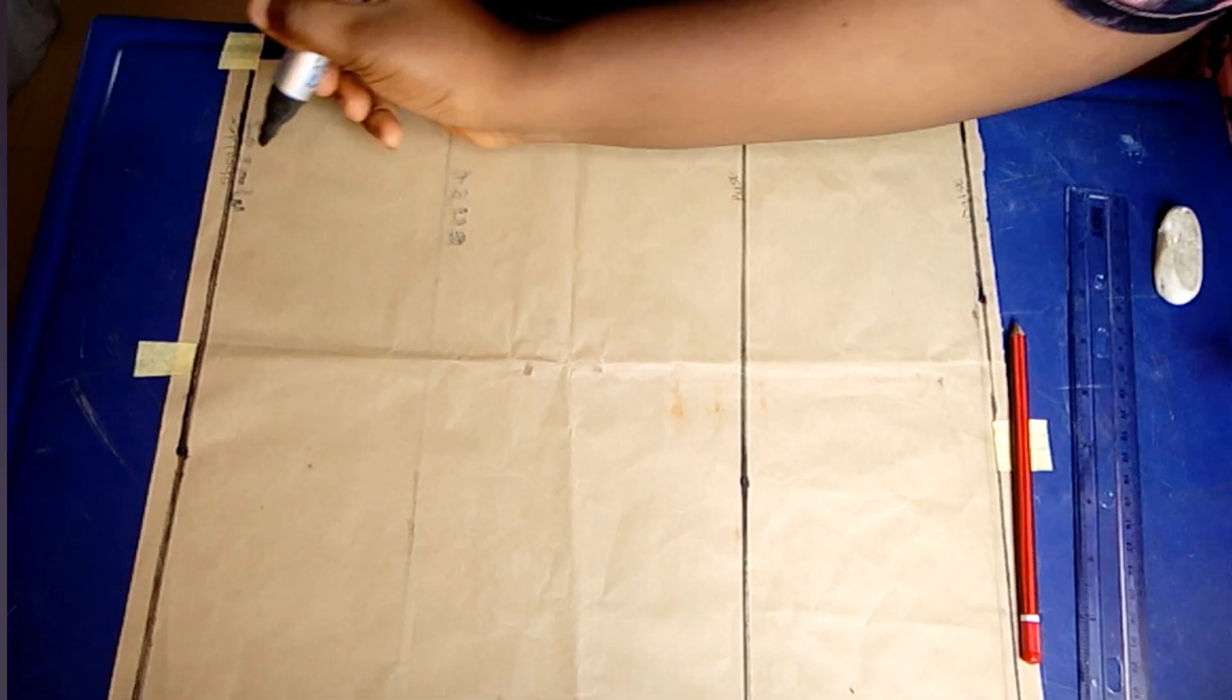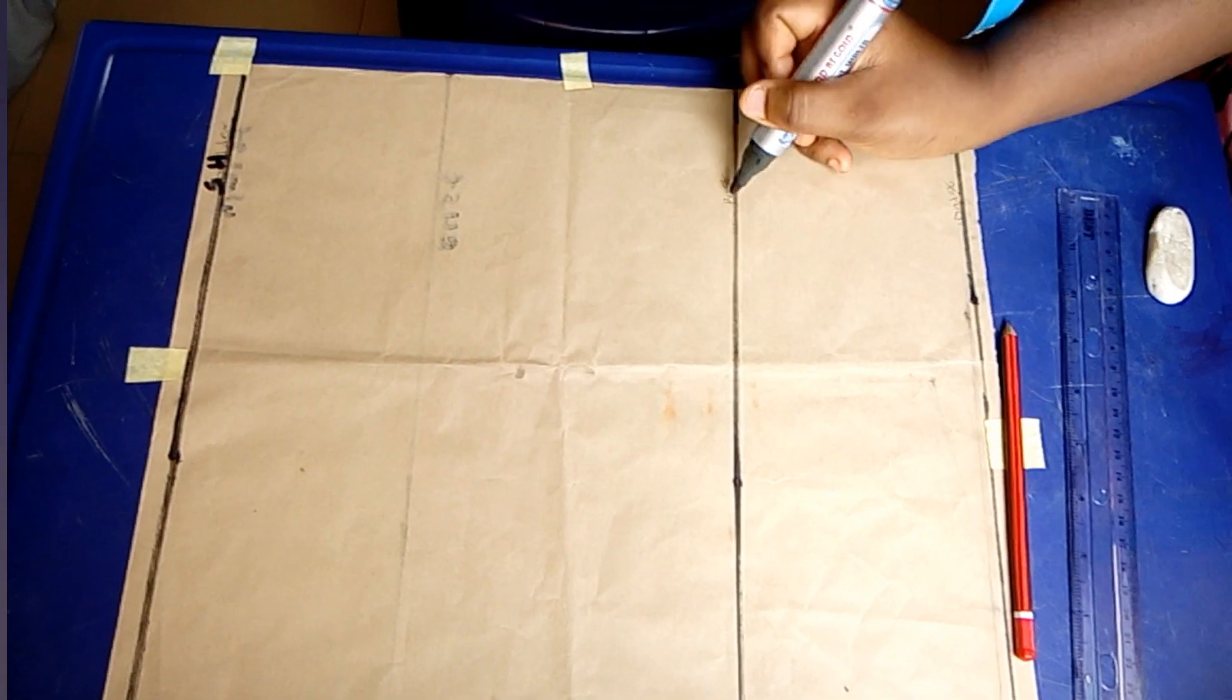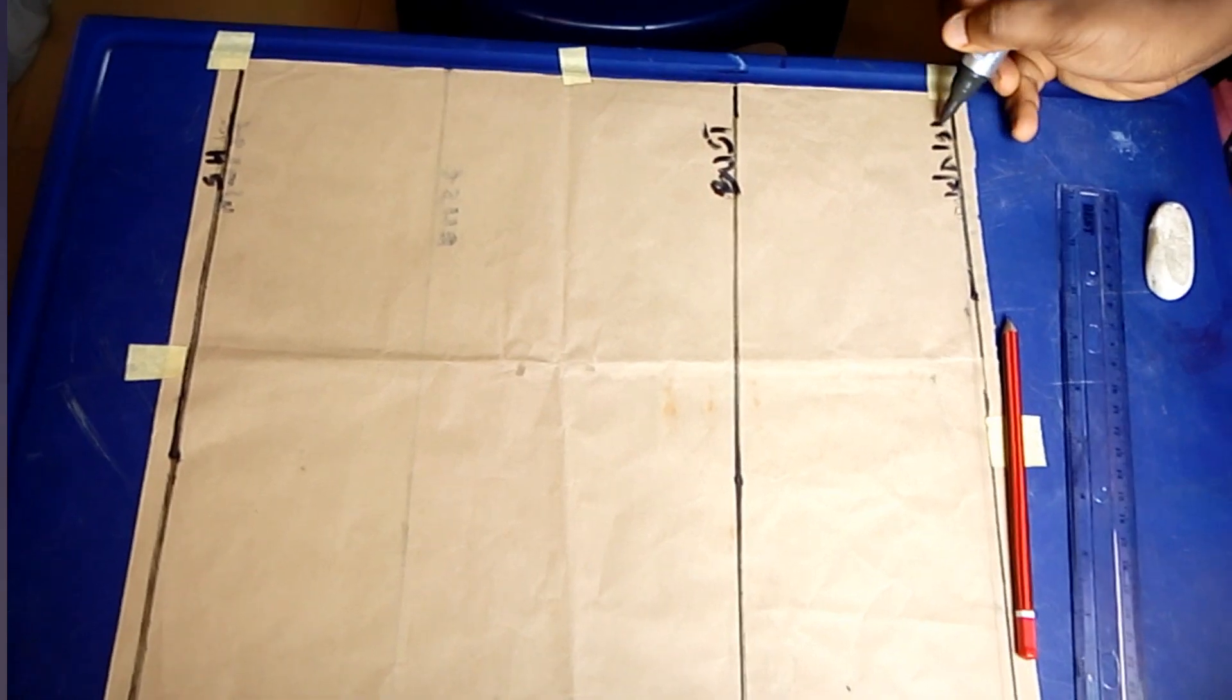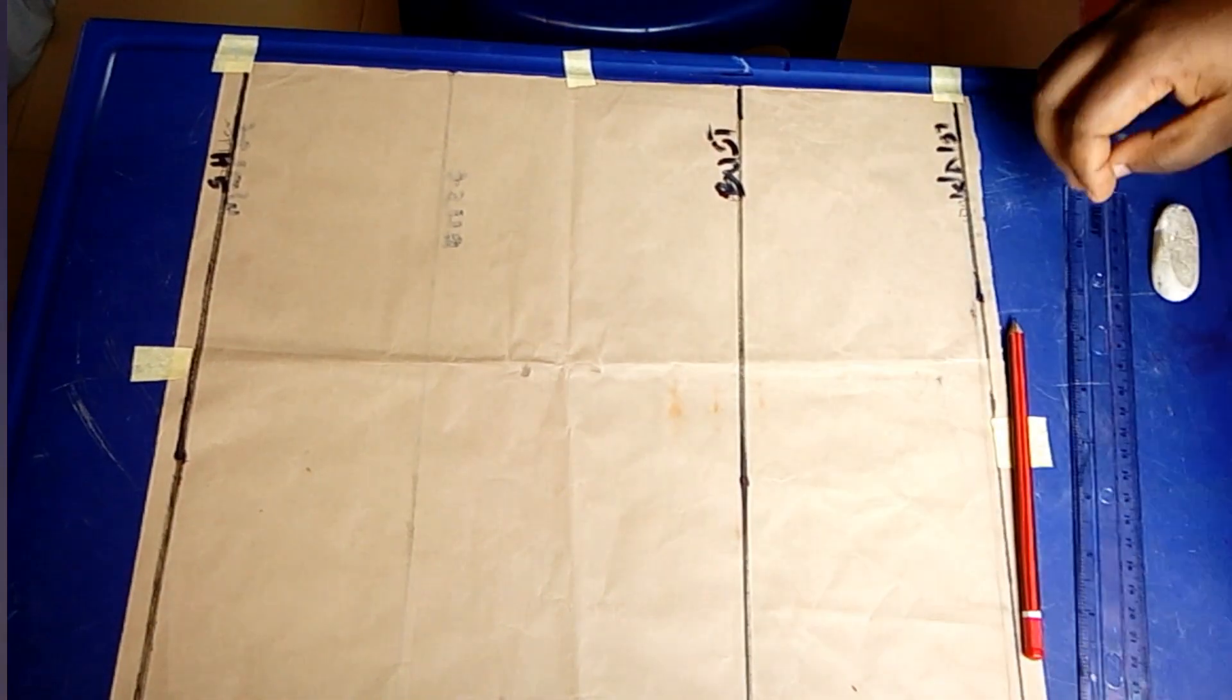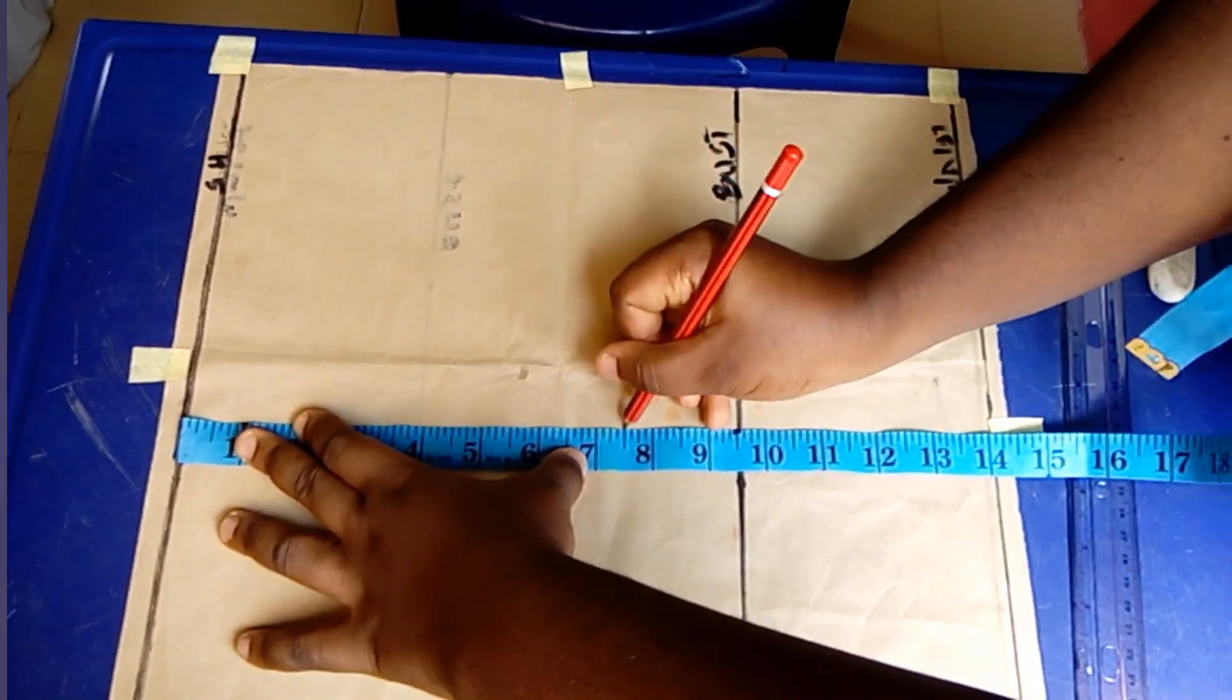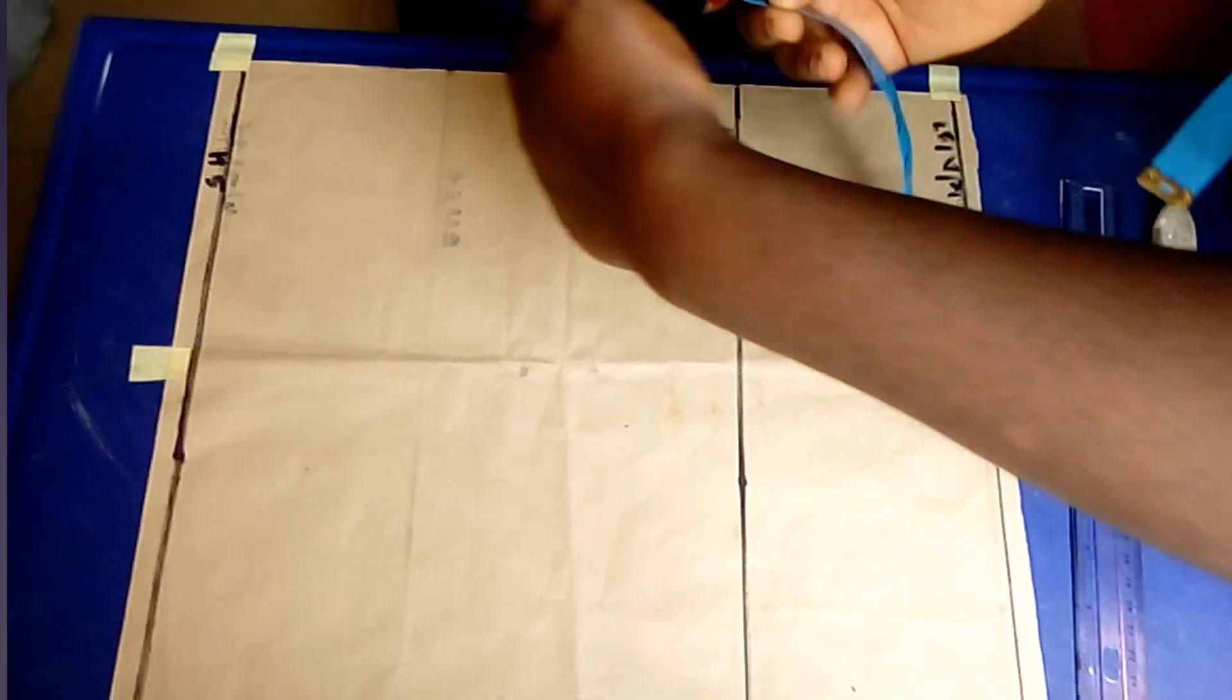I have three lines on my drawing paper: shoulder, bust, and waist. I'll repeat my chest measurements, that is 15 divided by 2, which is 7.5. You can see me marking it.